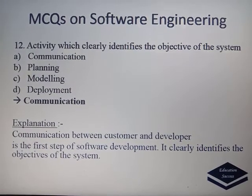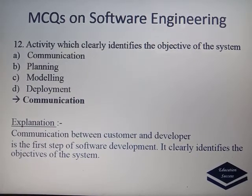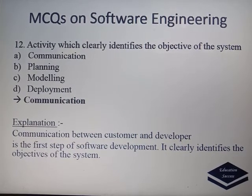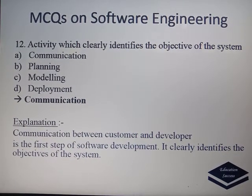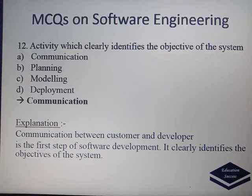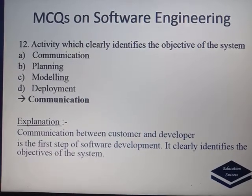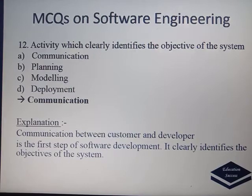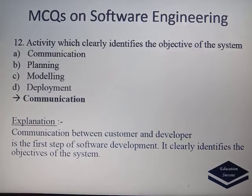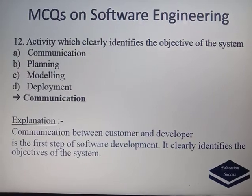Which activity clearly identifies the objectives of the system? Options are Communication, Planning, Modeling, and Deployment. The correct answer is Communication — communication between customer and developer. It is the first step of software development and it clearly identifies the objectives of the system.